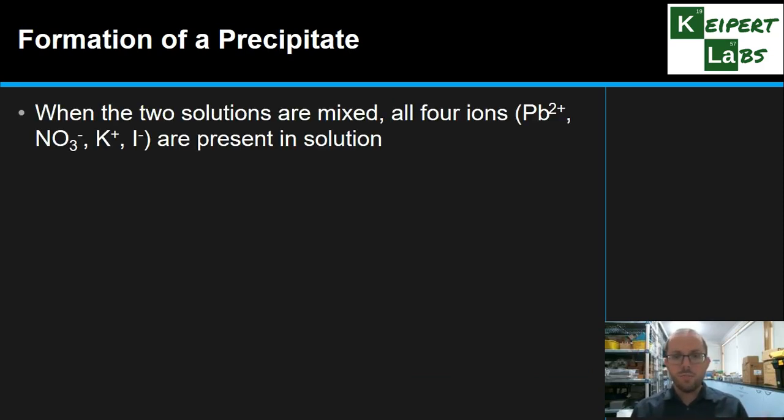We've got two solutions, we've mixed them together. In that mixed solution, that combined solution, we've got all four ions. We're going to go through this using lead iodide as our example. So we've got lead (Pb²⁺), nitrate (NO₃⁻), potassium (K⁺), and iodide (I⁻) ions, all combined together.